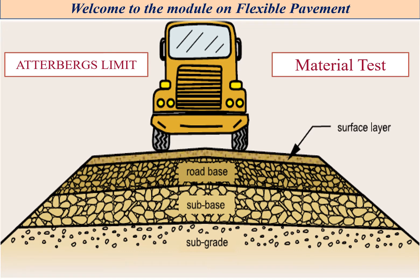The cross-section of flexible pavements consists of subgrades, sub-base, roadways, and the surface layers. Below the subgrade, you will have the embankment. Under each section of the cross-section of flexible pavements, Atterberg's limits play a very important role, as the suitability of the material more or less depends on the values of the Atterberg's limits — that is, the liquid limit and plastic limit of particular soils.